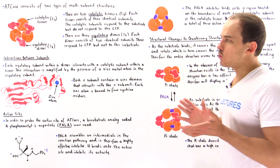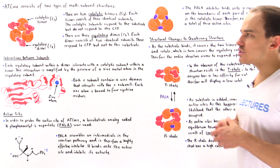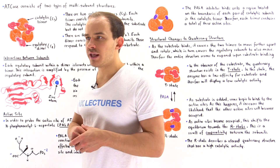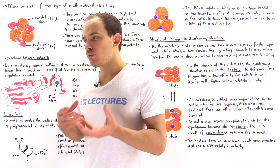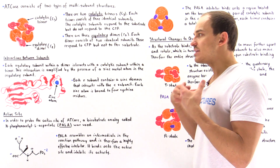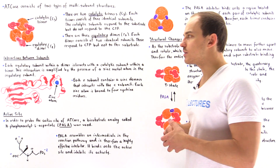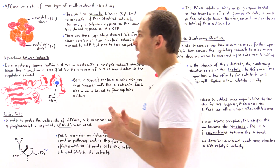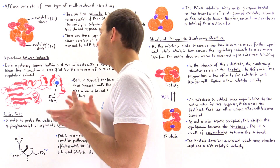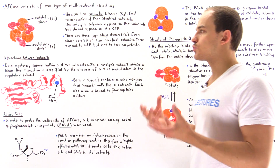What we want to focus on in this lecture is the actual structure of aspartate transcarbamoylase, and then we want to discuss what happens to that structure of the enzyme once the substrate molecule actually binds onto the active site of the enzyme. So let's begin by describing the structure.